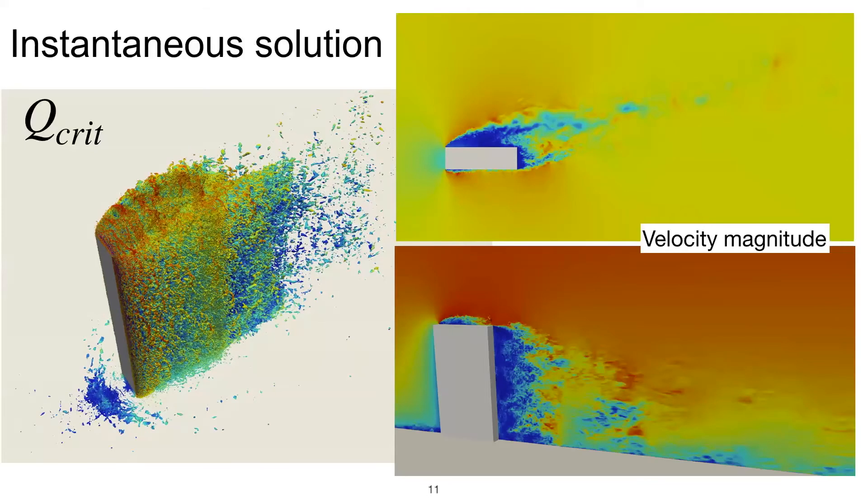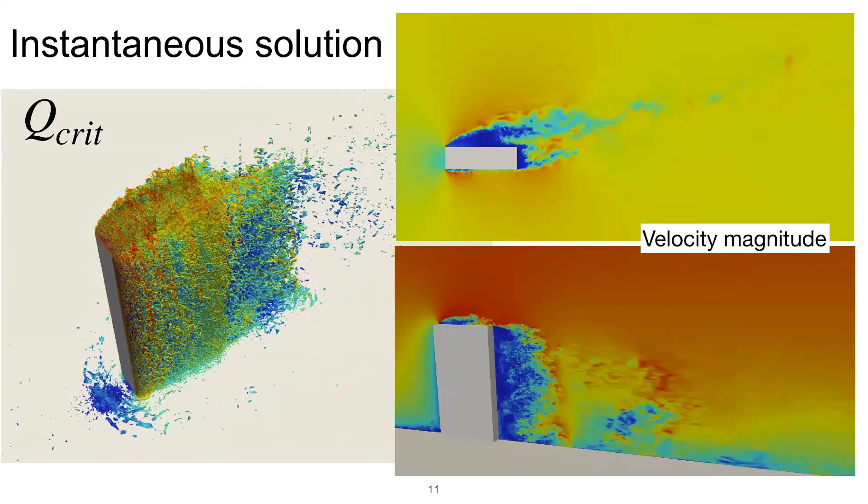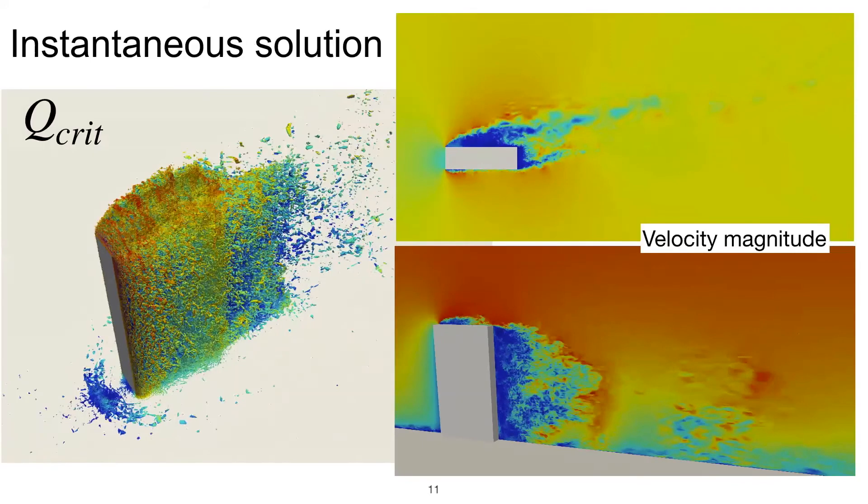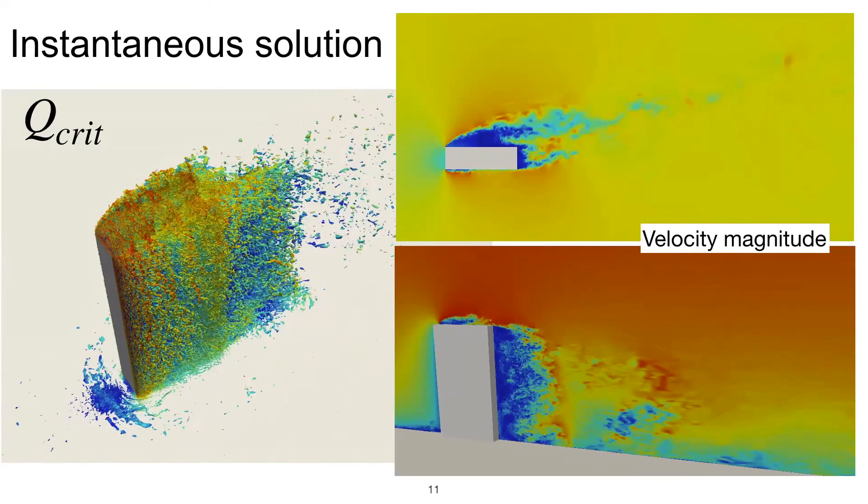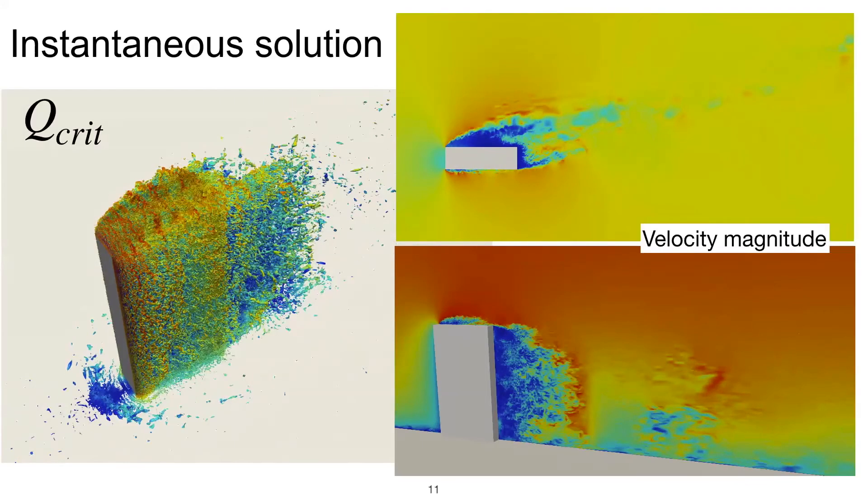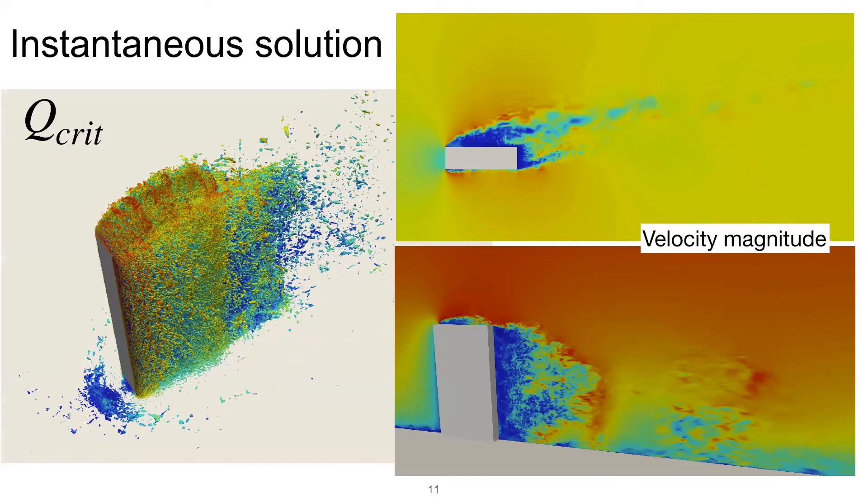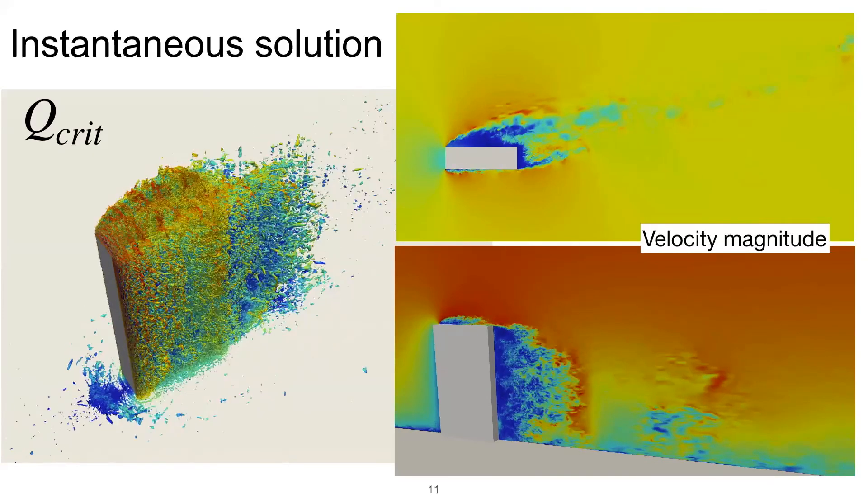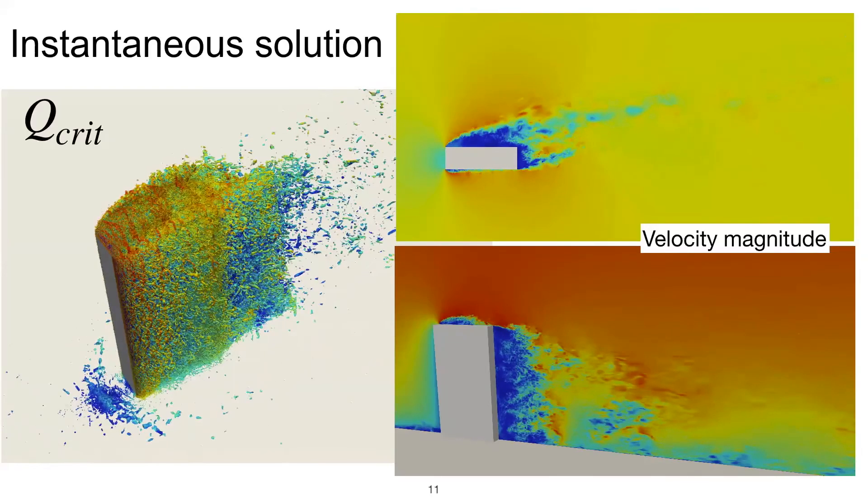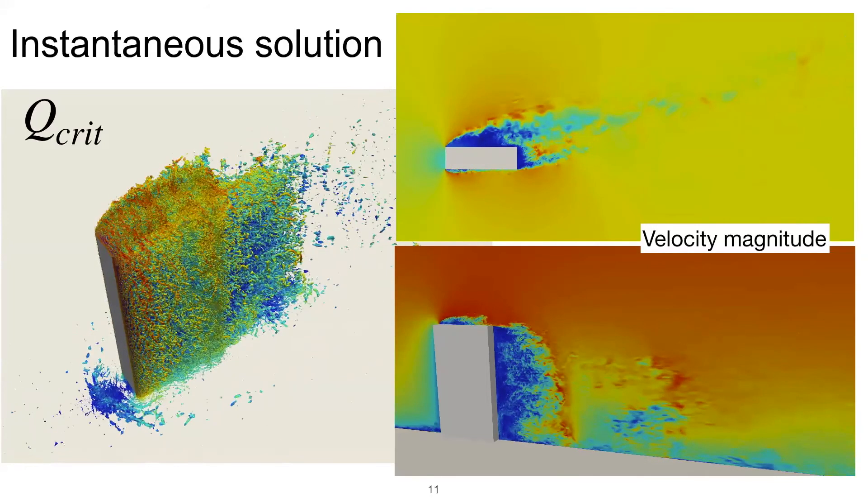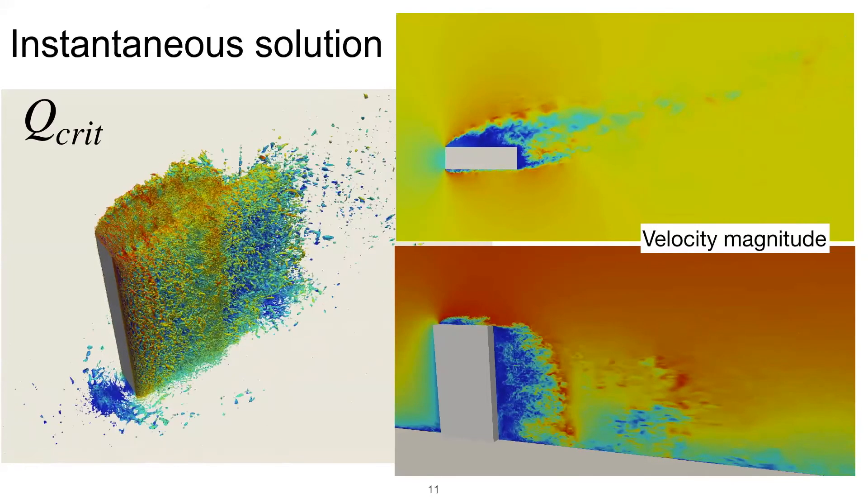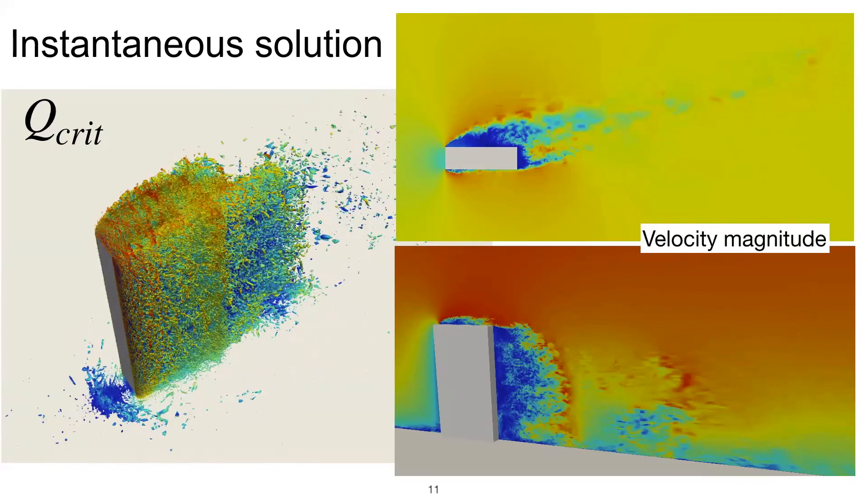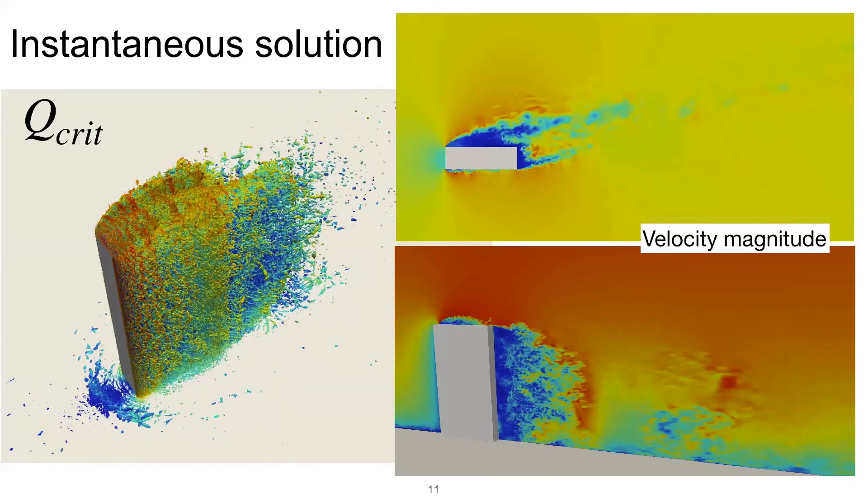So how does the flow look like? On the left, you can see the Q criterion, and on the right, the velocity contours at two particular cuts. We have sharp edges, so they fix the transition point and the separation point. We have a very fine turbulent flow that we're resolving really well close to the building. That's where we clustered our degrees of freedom, and we lose some resolution far away, but that was somehow to be expected. We are measuring the pressure on particular areas of the building. We're not so much interested in the wake behind the building.